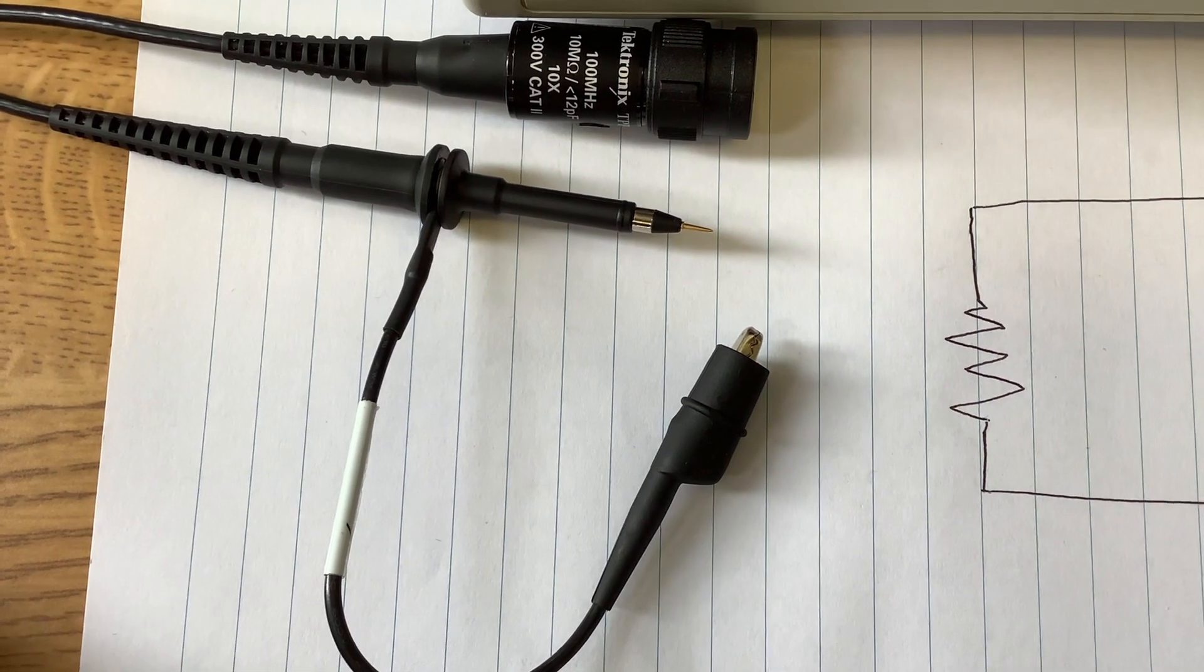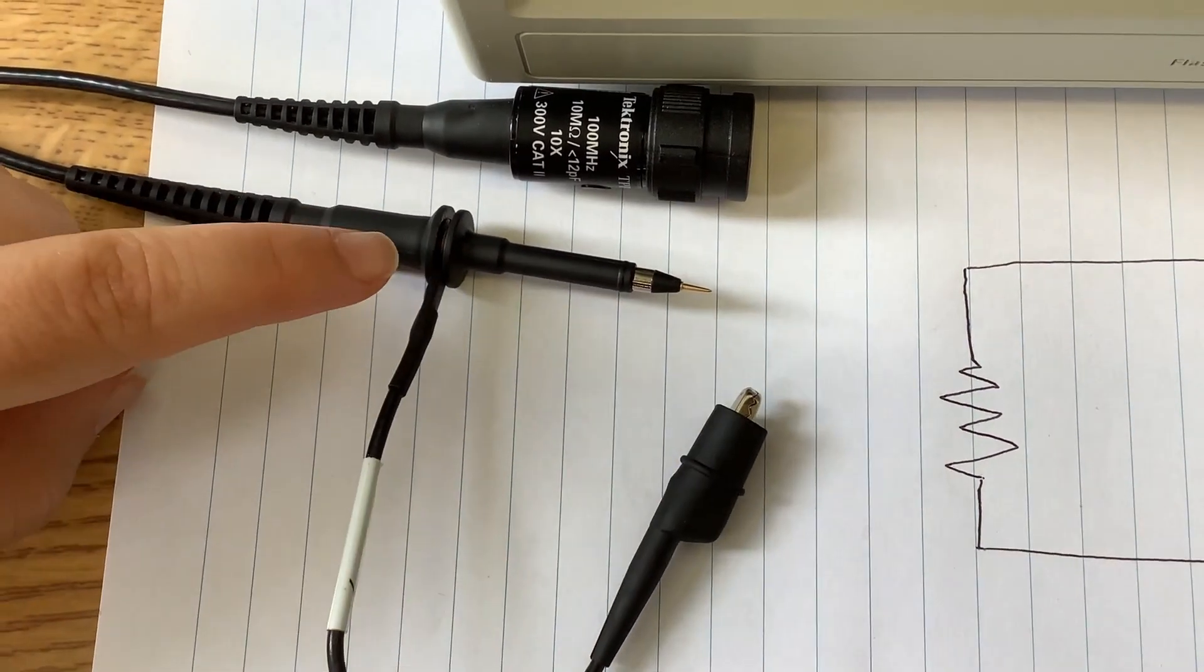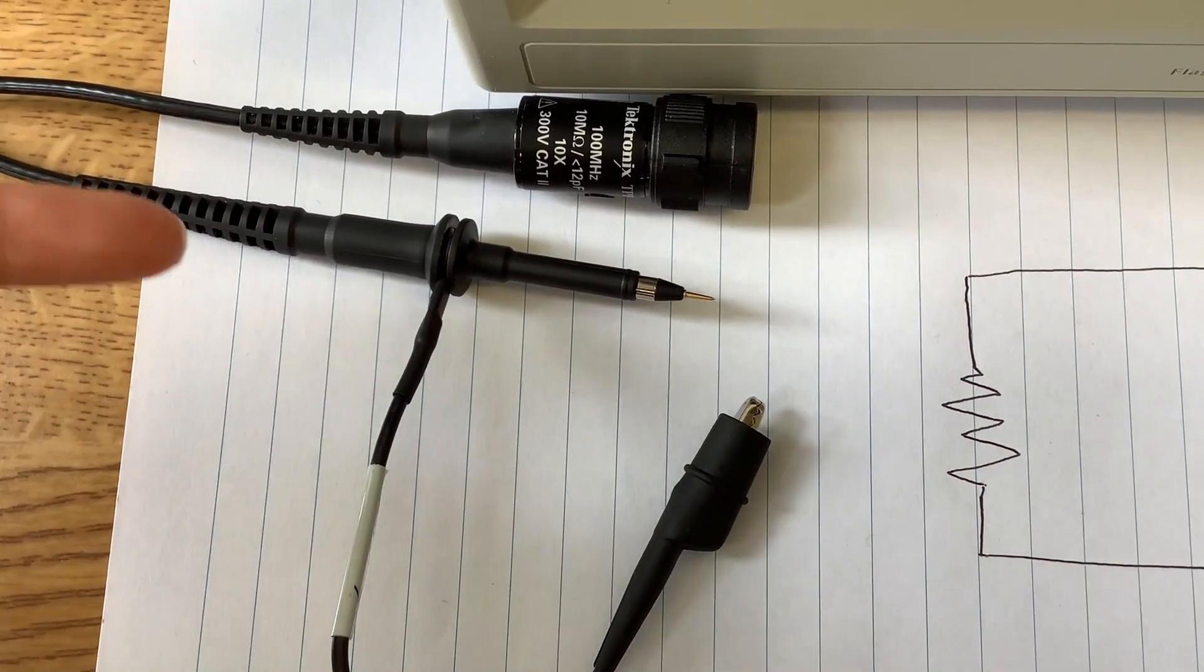To measure the voltage in our circuit, we're going to use a probe connected to the oscilloscope.